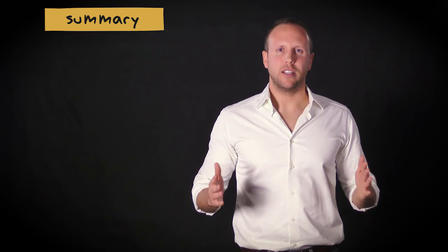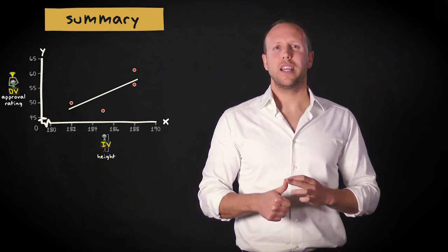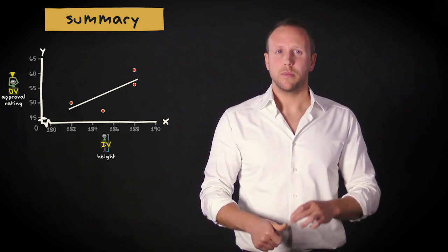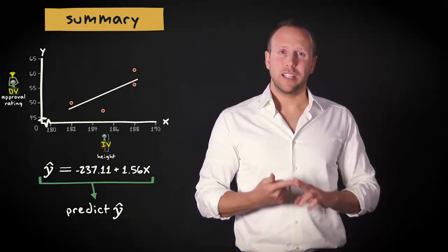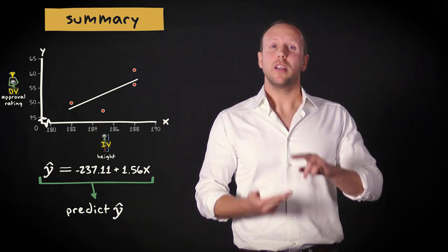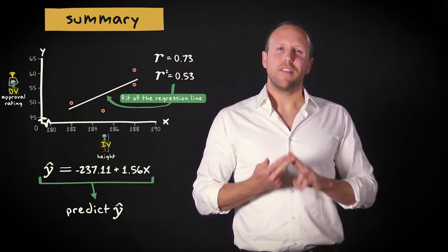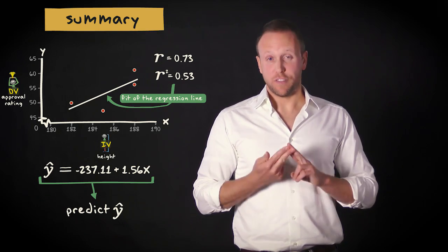So, what have we done in this video? First, we determined the straight line that describes the relationship between our two variables best. Second, we have predicted values of our dependent variable based on the line and the corresponding regression equation. Third, by means of Pearson's r and r squared, we have investigated how well the line fits our data.